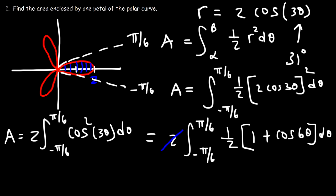So the area for two loops is going to be 4. That is the total area of the lemniscate. The area on the right is 2, the area on the left is 2, so the total area is 4.